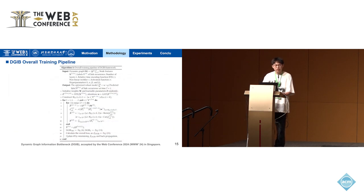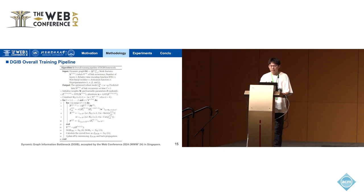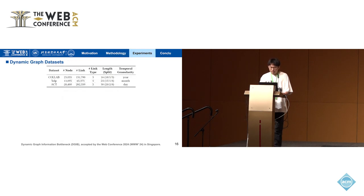This is the overall training pipeline of the DJIB framework. We have analyzed computational complexity and spatial complexity in depth, which can be reviewed in the corresponding chapters of the paper. Analysis concludes that the computational complexity and spatial complexity are on par with state-of-the-art dynamic GNNs.